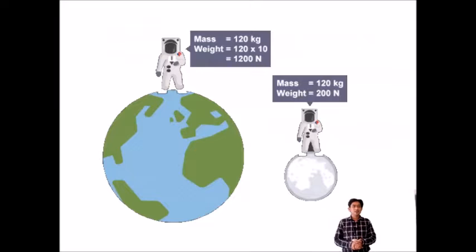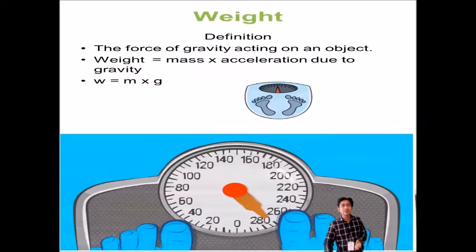Now, let's see two different planets. So I told you mass always remains constant. So on both planets, what about the magnitude of mass? 120 kg. But weight is different. Why is weight different? What is the reason?